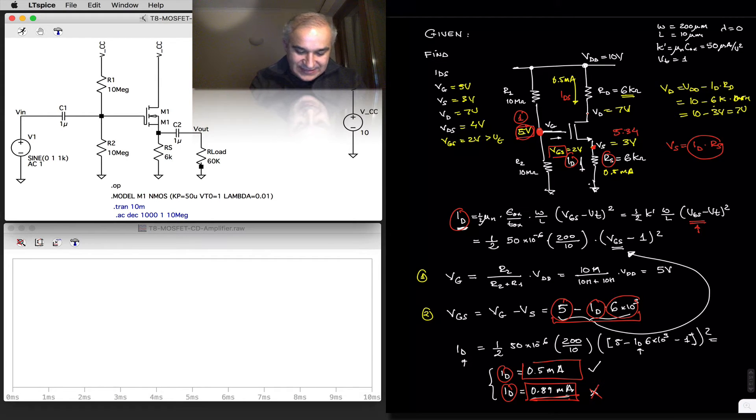If we insert a signal here at the input and we take the output at the source, we have a common source follower, or a common drain amplifier.